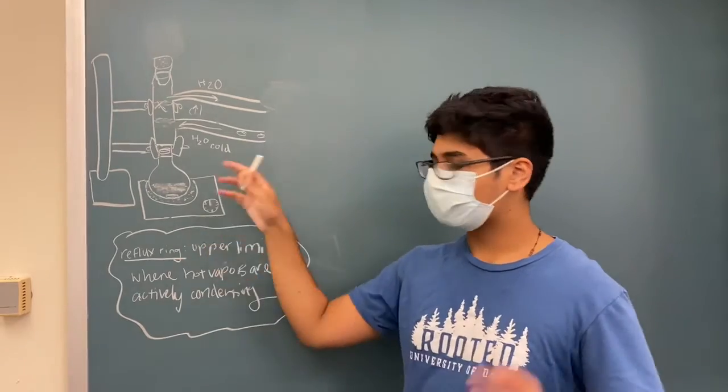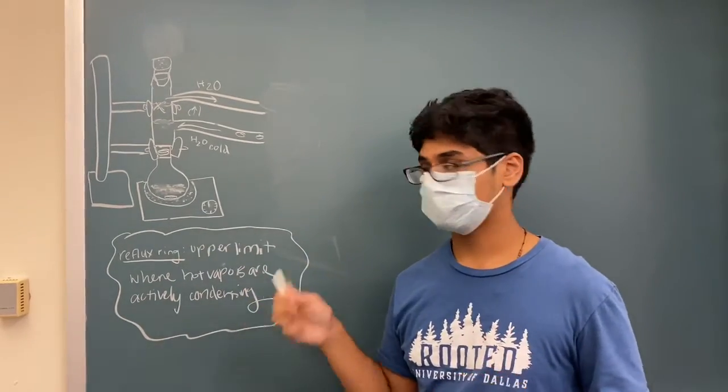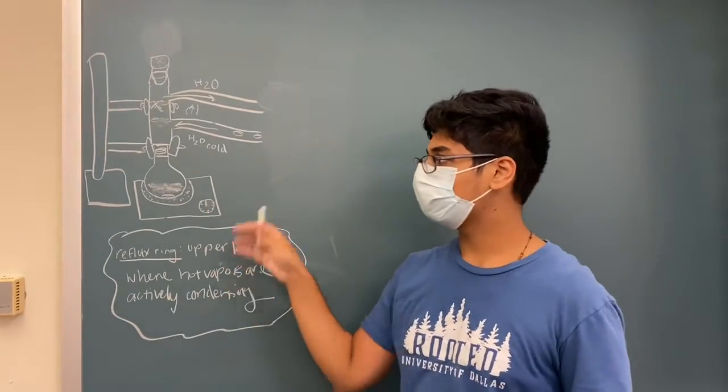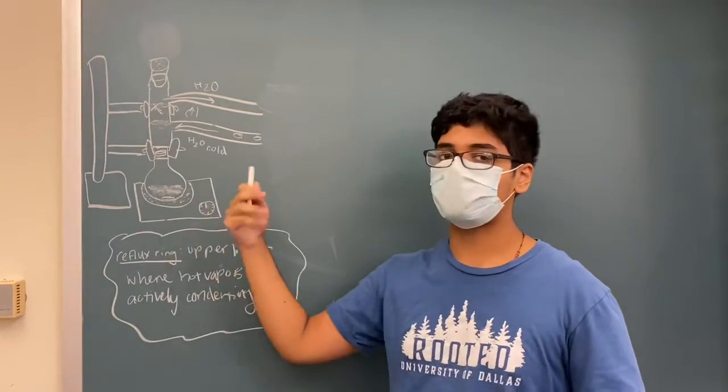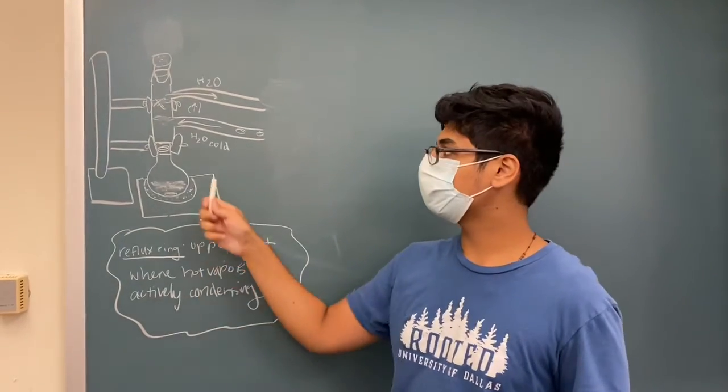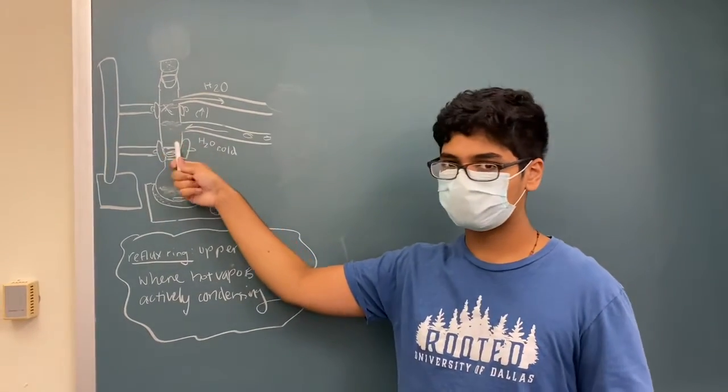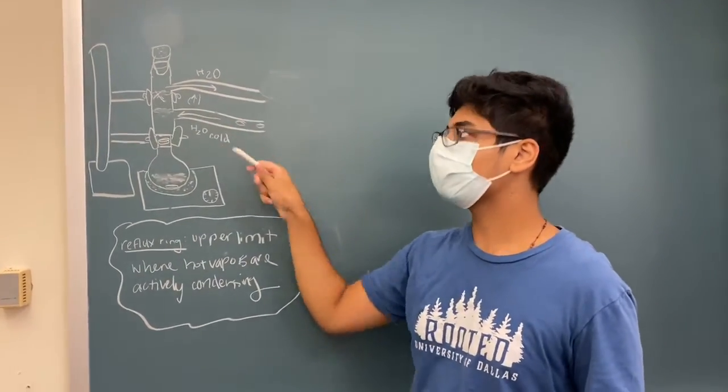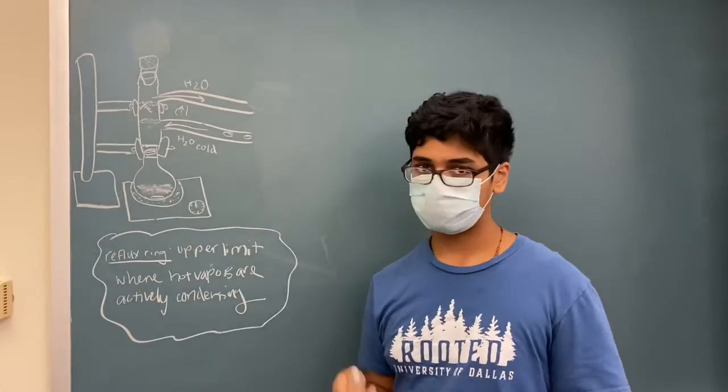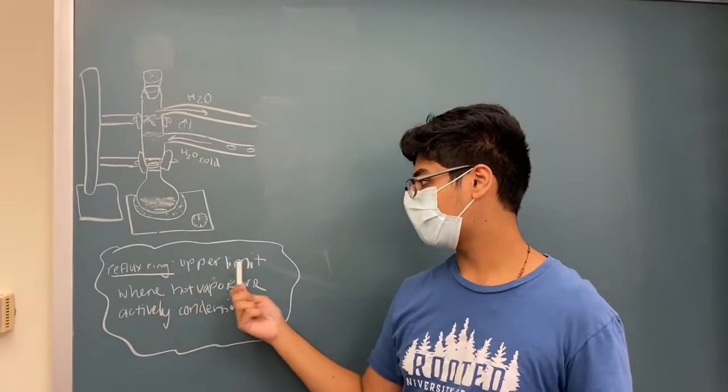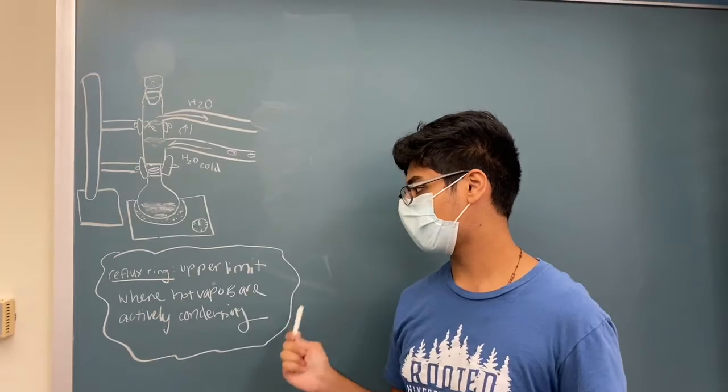Then once all the apparatus and everything is set up you start turning the heat and you should see that the solution is starting to boil. As the solution boils you should observe a small reflux ring along the lower one-third region of the vertical condenser column. Basically a reflux ring is the upper limit where hot vapors are actively condensing.